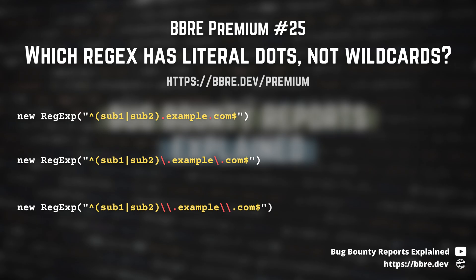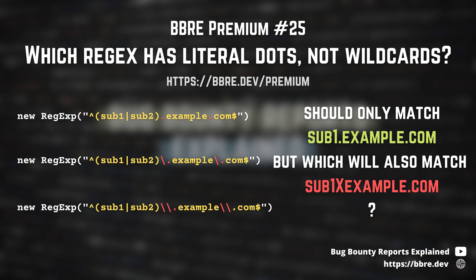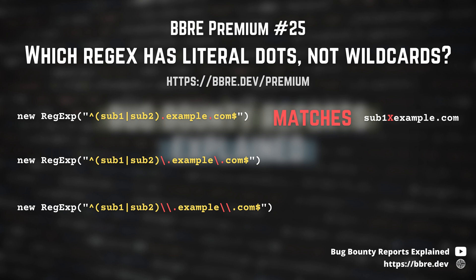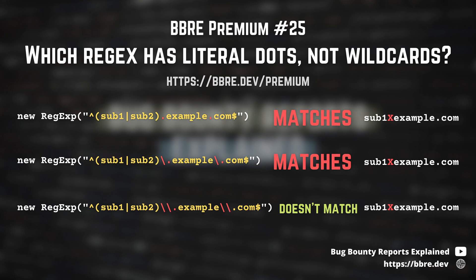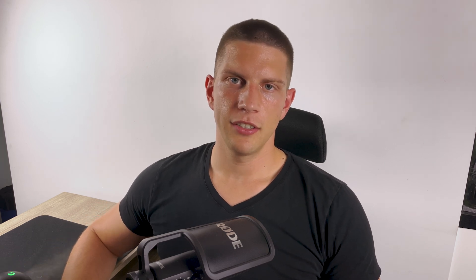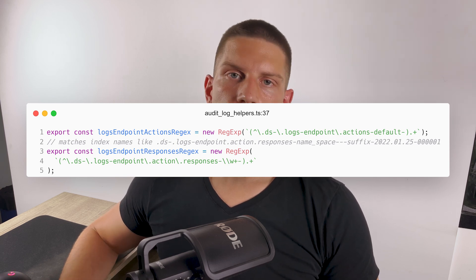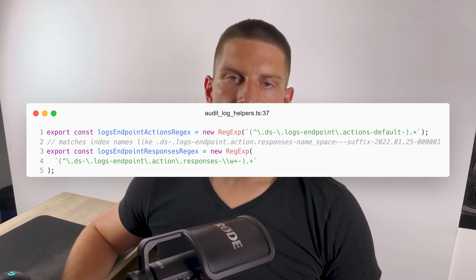Take this example from BBR Premium issue 25: you have three regexes, and the question is which ones have escaped dots versus wildcards. The first one obviously matches wildcards — the dot matches any character. The third one matches escaped dots — the dot only matches a literal dot. But the middle one, which you'd think also matches a literal dot, actually doesn't — the dot there is a wildcard. Kibana developers don't know this either, and this is the code where they have badly written regexes. Unfortunately, to my knowledge, this is not in a place that constitutes a security vulnerability.